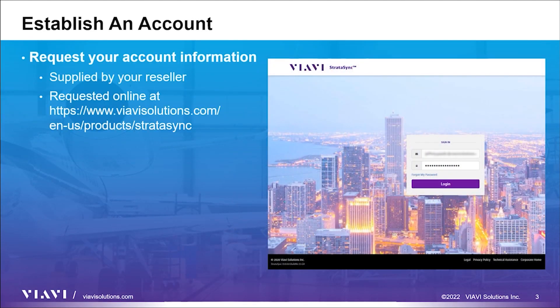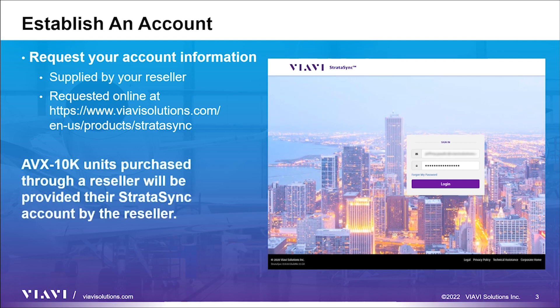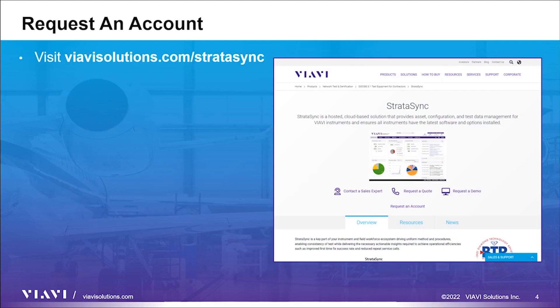Accessing the Stratasync system to access reports or manage assets requires a Viavi account. There are two paths to obtain an account. If you purchased your AVX-10K from a reseller or channel partner, you will need to ask your reseller or channel partner to provide you with your Viavi account information. If you did not purchase from a reseller or channel partner, you will need to follow these steps.